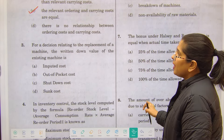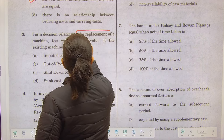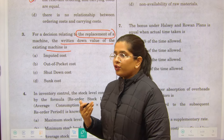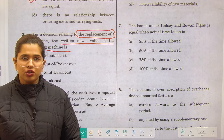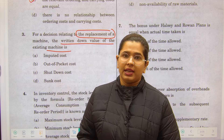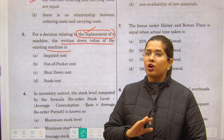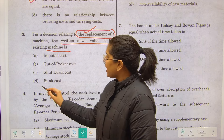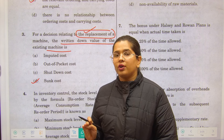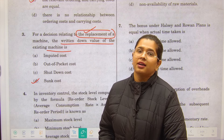Question number three is about the decision related to replacement of a machine. The written down value of the existing machine — when you have already incurred cost on the old machine and now want to buy a new machine — the cost of the old machine is of no relevance. That is why we call it a sunk cost, because the previous expenditure already made on the old machinery is irrelevant going forward.